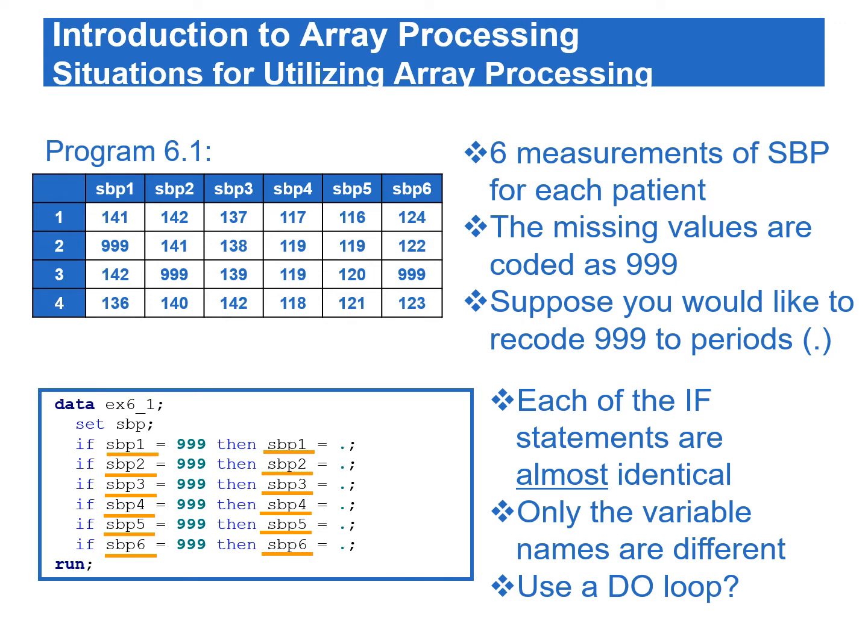In this program, each of the if statements converts the number 999 to a SAS missing value. These if statements are almost identical — only the names of the variables are different.